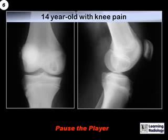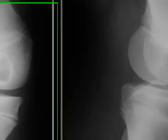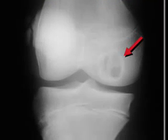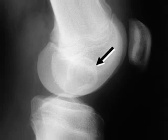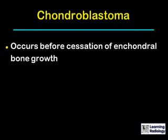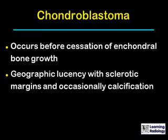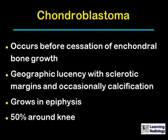The next case is a 14-year-old with knee pain. There is a lytic geographic lucency in the epiphysis of this growing child. It has a sclerotic margin and some flecks of calcification within it. This is the typical appearance of a chondroblastoma. Chondroblastomas occur in the epiphysis before the cessation of enchondral bone growth. They are geographic lucencies with a sclerotic margin, occasionally containing calcifications, and 50% of them occur around the knee. A similar appearing lesion in an adult is usually a giant cell tumor.